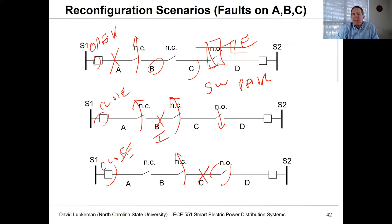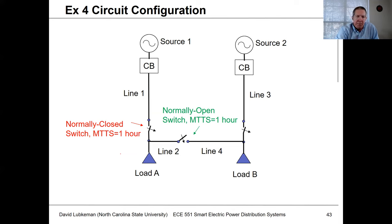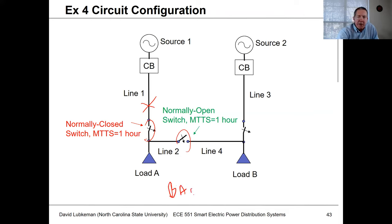If the time to do the switching is less than the time to repair, it's worthwhile to send a crew out there to do circuit reconfiguration first before fixing the fault. This is the scenario we're going to look at. Since it's a new scenario, we have to redo the base case. Basically, what we're looking for is a way where if I have a fault on line one, I open this switch and close this switch — what we refer to as a back-feed scenario.